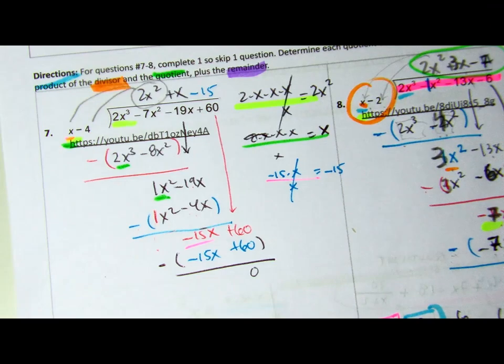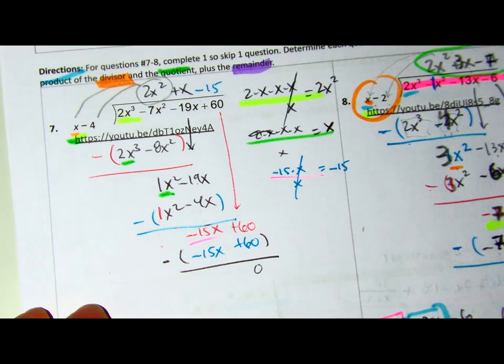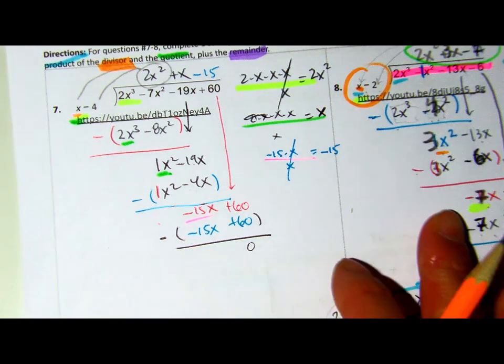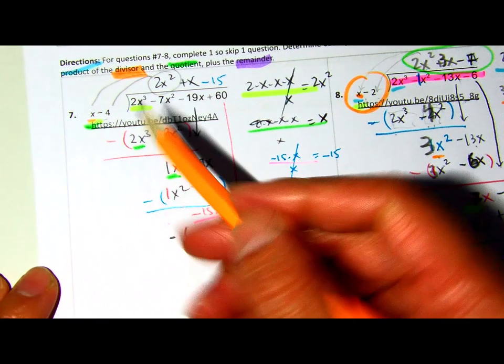Alright, so we just did long division, and maybe this box idea is more helpful for you. So, I know on my box, it's gonna be 2.